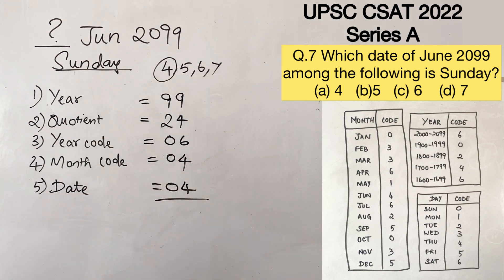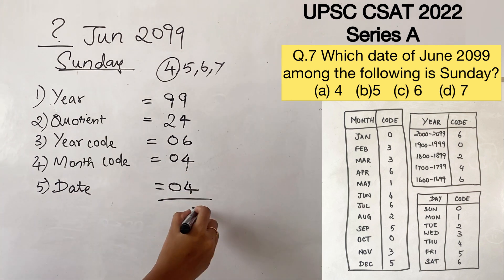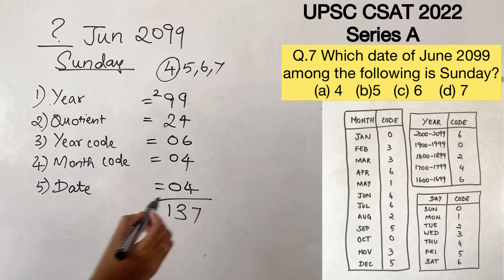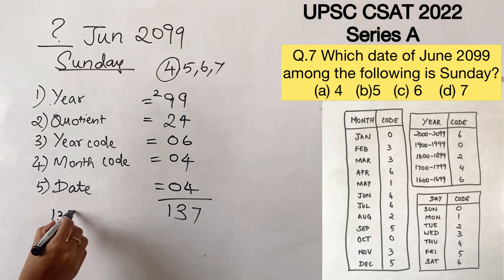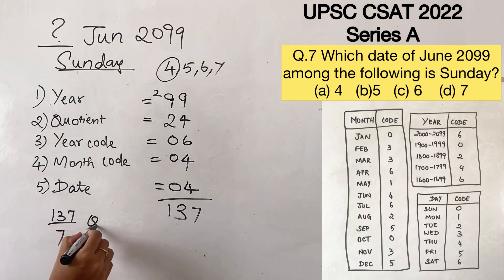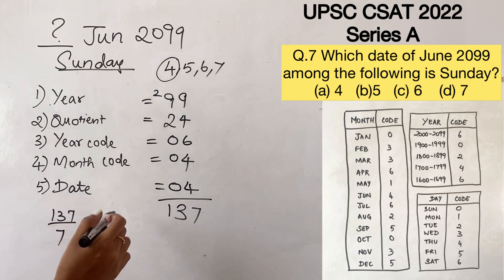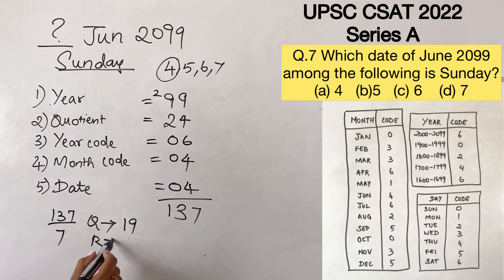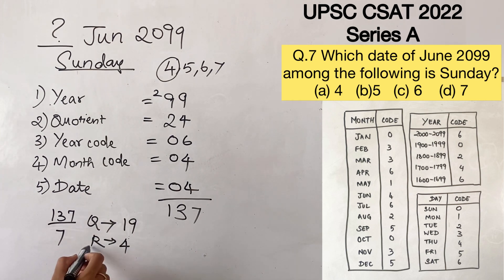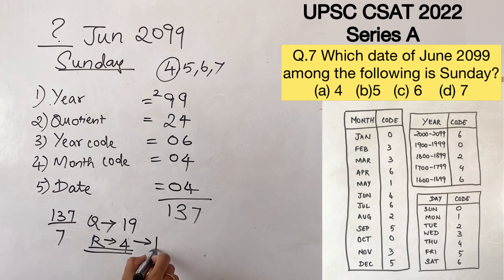The total will add up to 137. Dividing 137 by 7, the quotient will be 19 and the remainder will be 4. So what day corresponds to 4? 4 is a Thursday.